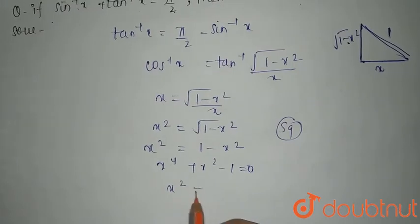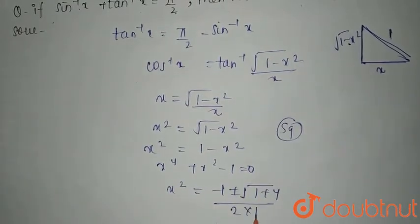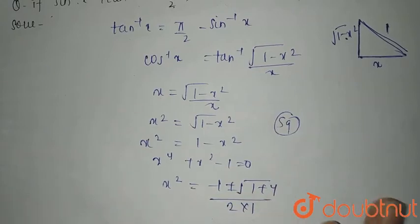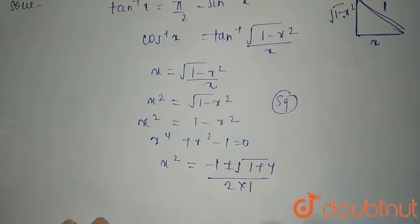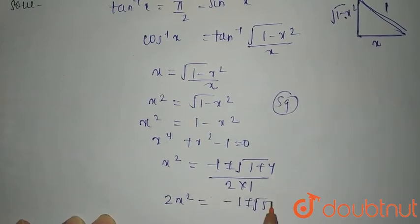So you're left with x square equals minus 1 plus minus root of 1 plus 4 divided by 2 into 1. What is this? This is the discriminant, that is minus b plus minus root of 1 plus 4 divided by 2a. So this comes out to be 2x square equals minus 1 plus minus root 5.